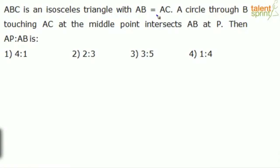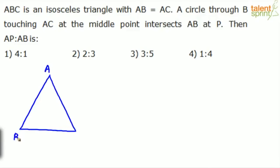ABC is an isosceles triangle with AB equals AC. A circle through B touches AC at the middle point and intersects AB at P. It's all about drawing the right figure. Let's draw an isosceles triangle ABC where AB and AC are equal. A circle is drawn through B and touches AC at the middle point — let's say it touches AC here at the middle point Q.